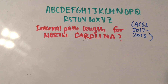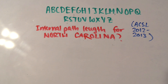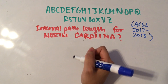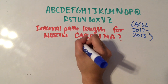This is question number one from contest 4, senior division for the ACSL 2012-2013 season. It's asking us for the internal path length for North Carolina. Let's get started by drawing a binary search tree for this.